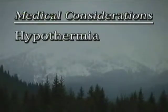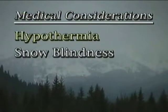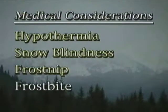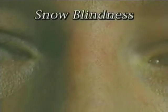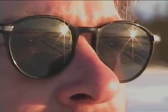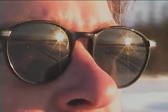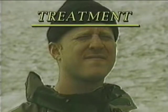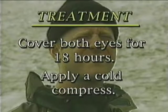Hypothermia is just one medical consideration in a cold land environment. Others include snow blindness, frost nip, and frostbite. Snow blindness is a condition where the outer layer of the eyes have been sunburned. In snow-laden areas, sunlight reflected off the snow is the main cause. The primary symptoms are redness and burning of the eyes; headache, poor vision, pain, and swelling may also accompany. Prevention is the best medicine — on sunny days, wear some type of protective eyewear. If your survival kit has sunglasses, use them. Even prescription glasses will afford some protection. Treatment includes covering both eyes for 18 hours and applying a cold compress to relieve pain and swelling.